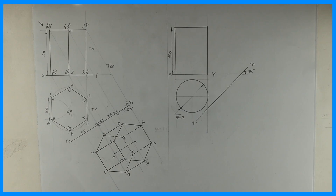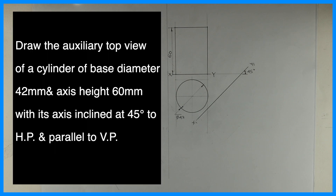Welcome to technical drawing. Today we are going to draw the auxiliary top view. The question is: draw the auxiliary top view of a cylinder of base diameter 42 mm and axis height 60 mm, with its axis inclined at 45 degrees to HP and parallel to VP.